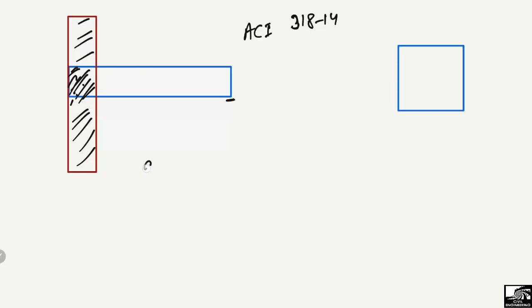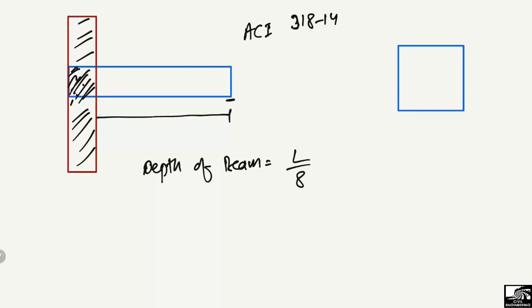According to ACI 318-14, the formula for the minimum depth of a cantilever beam is L divided by 8 — compared to L divided by 16 for a simply supported beam. If the beam length is 8 meters, then the minimum depth equals 8 divided by 8, which gives 1 meter or 1000 millimeters.